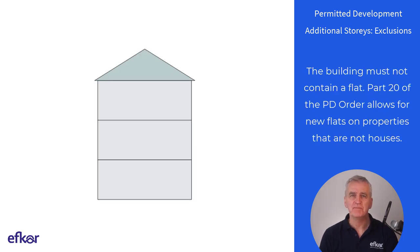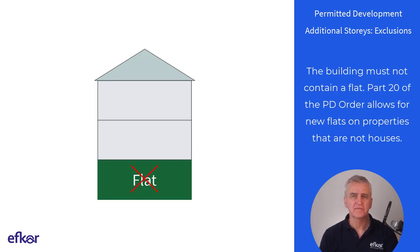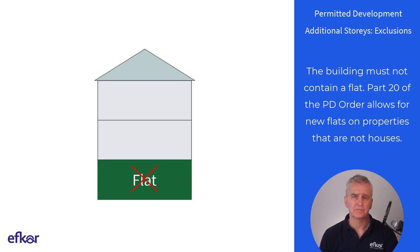The building must not contain a flat. Note that part 20 of the PD order allows for new flats on properties that are not a dwelling house.